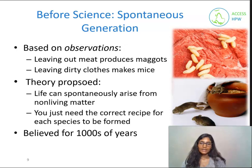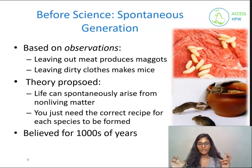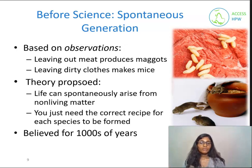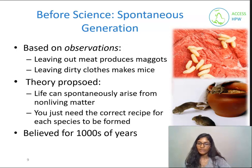One of the earliest scientific theories that was proposed was spontaneous generation, which is the idea that with the right ingredients or the correct recipe, life could be produced. For example, leaving meat out would produce maggots and leaving dirty laundry around would produce mice. People believed this for thousands of years, until a man named Rudolf Virchow in 1858 proposed the idea of biogenesis, which is the production of living things from living things.